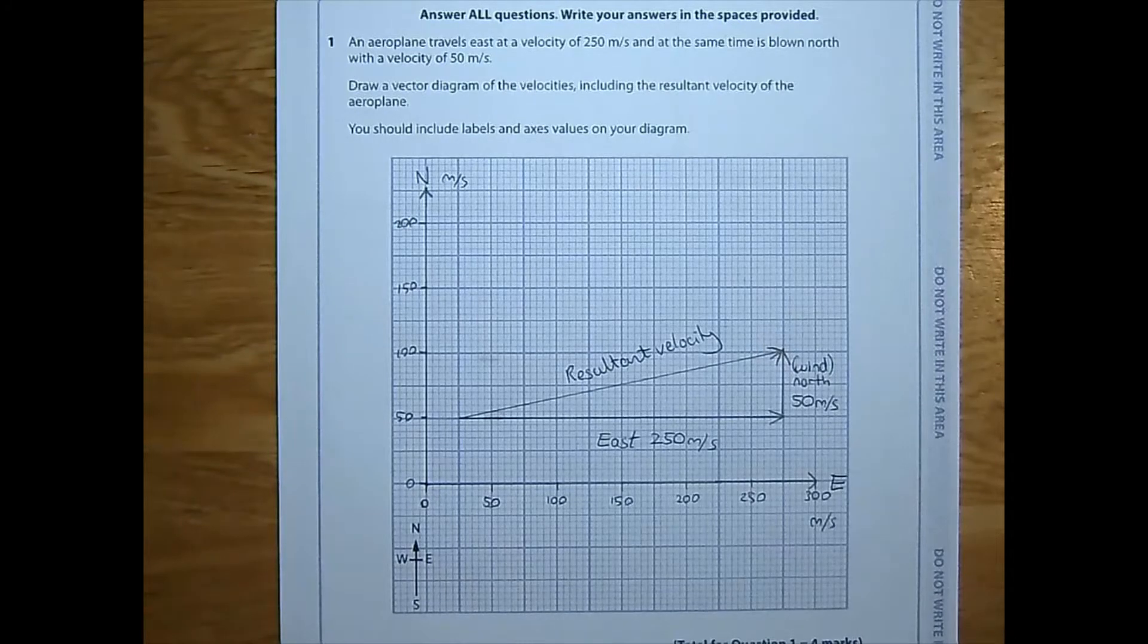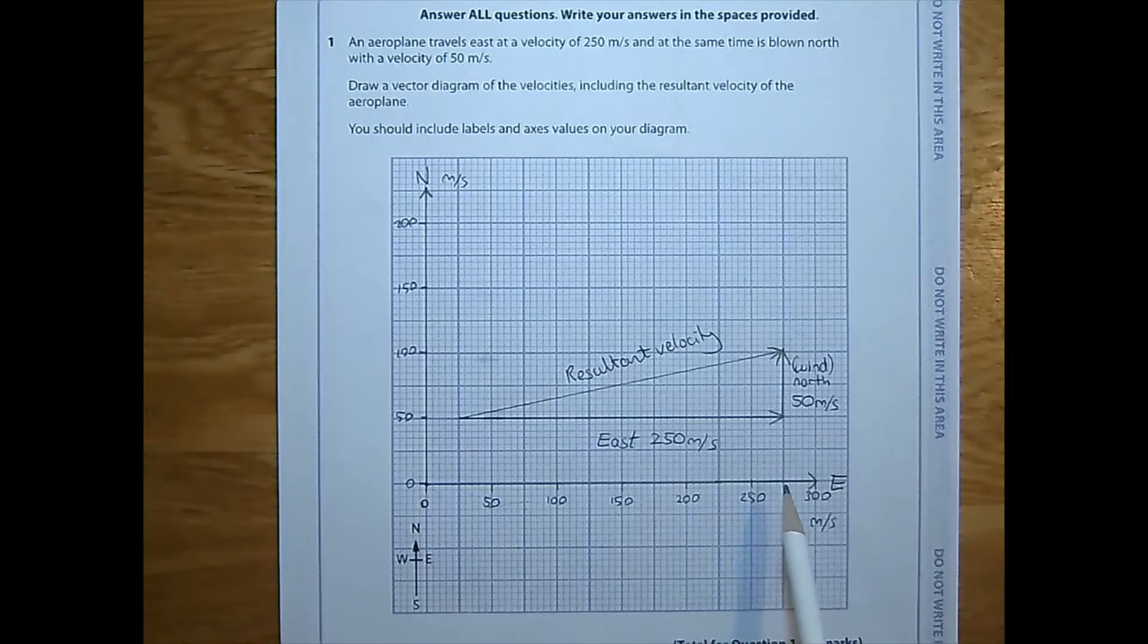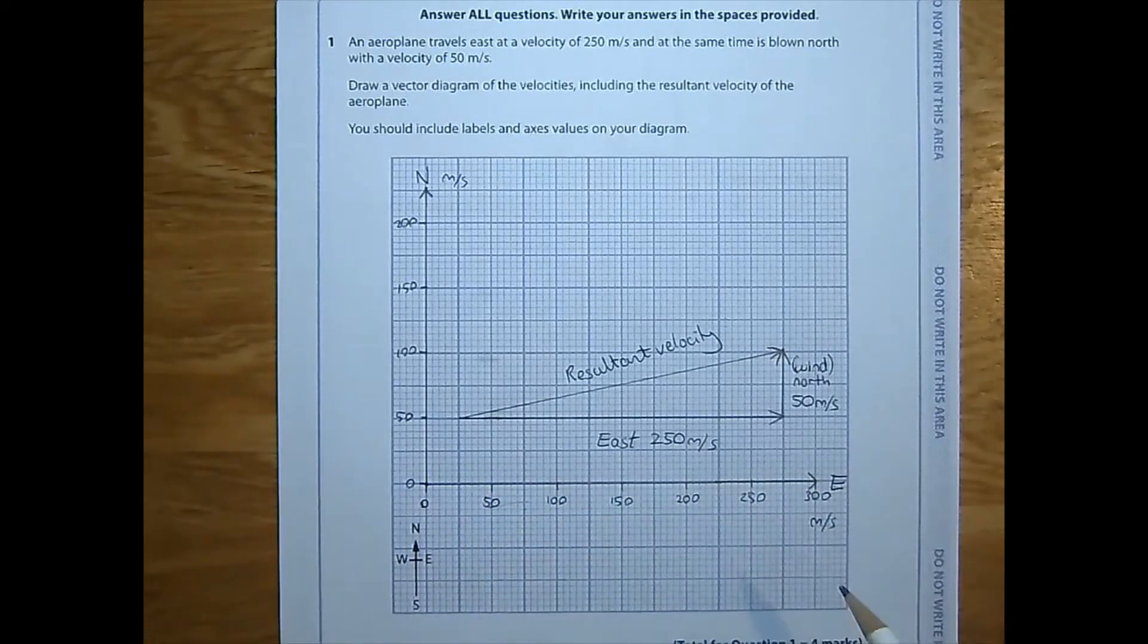Just to be absolutely doubly sure, I have labelled that value alongside the vector and stated that it's the northerly vector again and put wind in brackets to be clear. The easterly vector I've labelled as well as the fact that it's labelled on the axis, and I've put the value on with the units again. I've got the arrows going nose to tail with arrowheads shown in the correct direction. And here is the resultant that takes the shortcut.